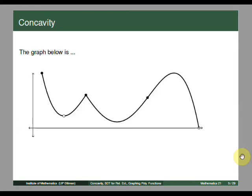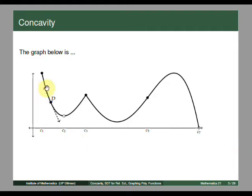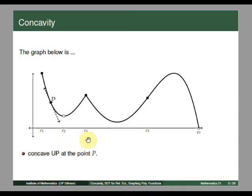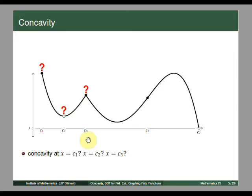Now let us look at some examples. Consider the graph of a function from c1 to c7. We label a point p and draw the tangent line to the graph at p. Observe that the points on the graph near p are all above the tangent line. Thus, we say it is concave up at point p. Notice that this is also true for any points between c1 and c2, and for any points between c2 and c3. Hence, we say it is concave up on the interval (c1, c2) and the interval (c2, c3). Now, how about the points c1, c2, and c3?